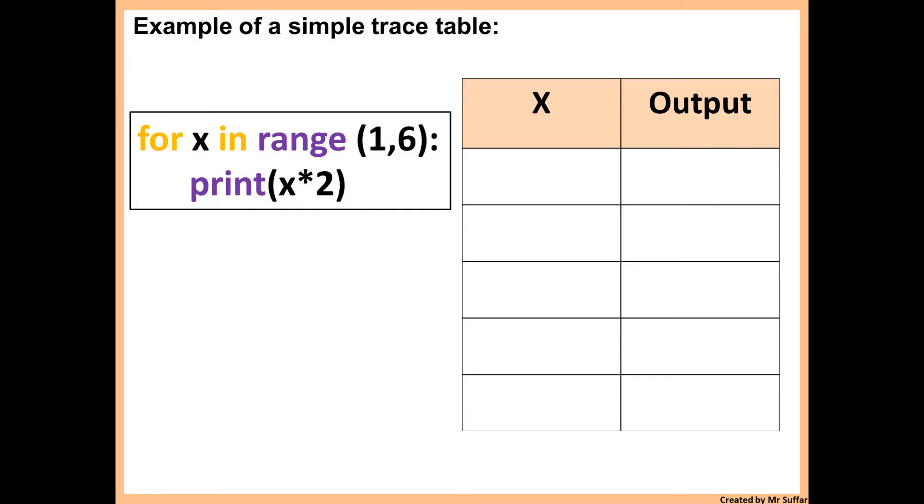So here is an example of a for loop. For x in range 1 comma 6. So the first thing that we need to find is the value of x. So we fill the table with the value of x. So x starts with 1 because the range is 1 comma 6.